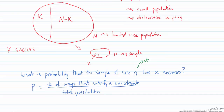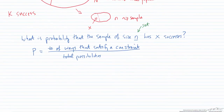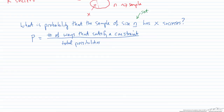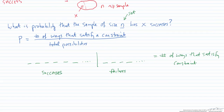The number of ways that satisfy the constraint comes from the fact that our sample is composed of a certain number of successes and a certain number of failures. If we multiply the combinations of successes with the combinations of failures for every possible pairing, that gives us the total number of ways to satisfy the constraint.